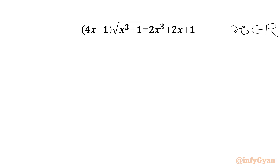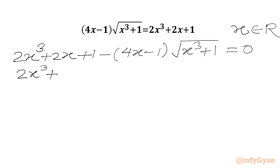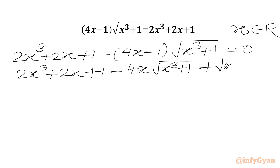Let's get started by writing all the terms to RHS first. So we will write 2x³ + 2x + 1 which is in the RHS. Then we will write our LHS with minus sign. So minus of (4x - 1)√(x³ + 1) equal to 0. Or we can write 2x³ + 2x + 1 - 4x√(x³ + 1) + √(x³ + 1) equal to 0.